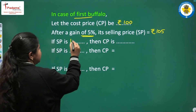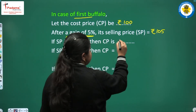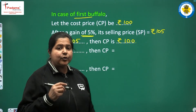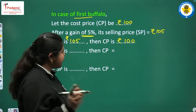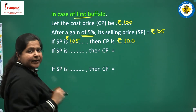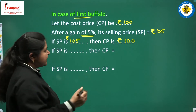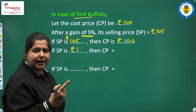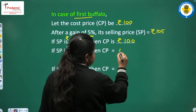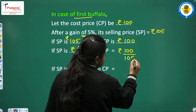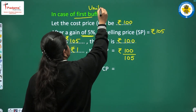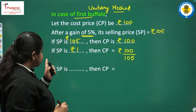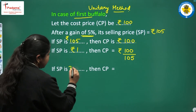Now if the selling price is Rs. 105, then the cost price is Rs. 100. We will use the unitary method. If selling price is Rs. 1, then cost price will be Rs. 100 upon 105. The selling price is Rs. 20,000.